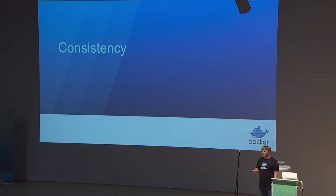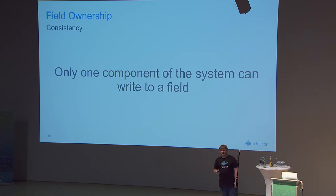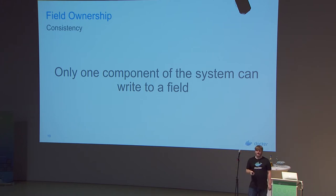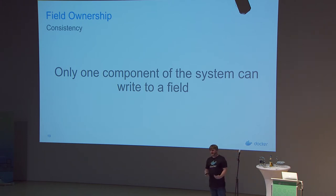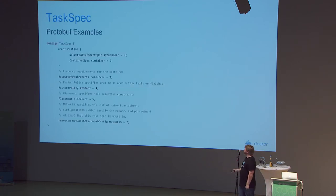Another aspect of our data model is a consistency model for communicating task status back to the cluster, with very strong field ownership. Only one component of the system can write to various fields at the same time. This restriction ensures that if a user writes a field and the orchestrator writes a field, we don't have to figure out which one was right.